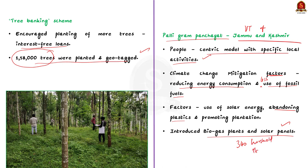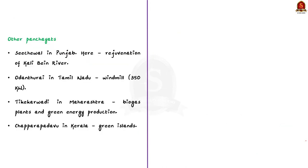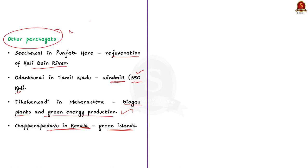There are also many other panchayats that have initiated carbon neutral programs. Chawal Gram Panchayat in Punjab rejuvenated the Kali Bein river with people's involvement. Odanthurai Panchayat in Tamil Nadu has its own windmill with power generation capacity of nearly 350 kilowatts. TK Karwadi Gram Panchayat in Maharashtra is well known for its extensive use of biogas plants and green energy production. And Chapparapadavu Gram Panchayat in Kerala has several green islands nurtured by the community. These are examples of carbon neutrality projects at the local level across India.